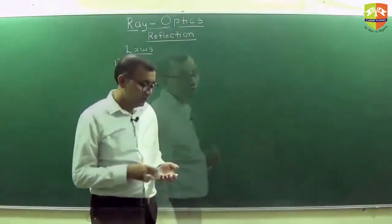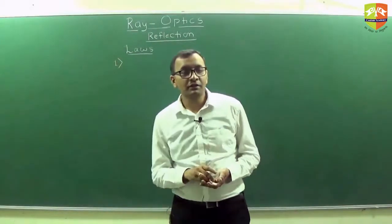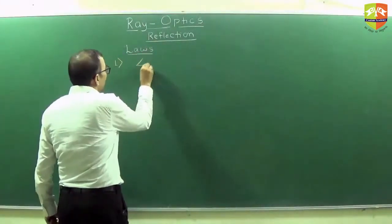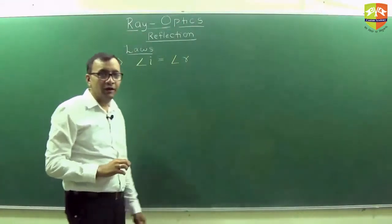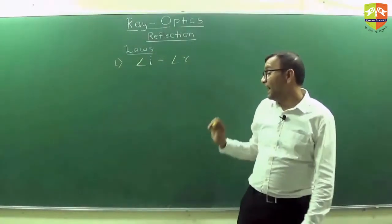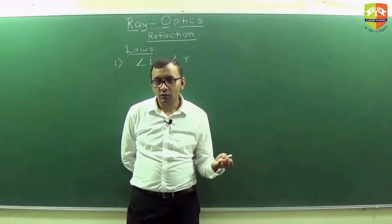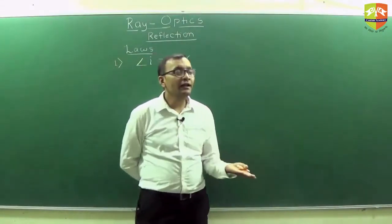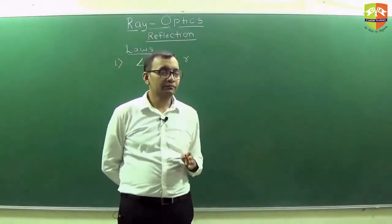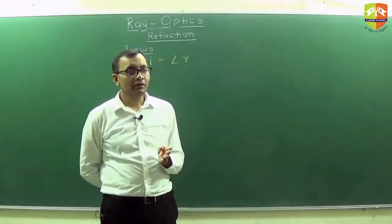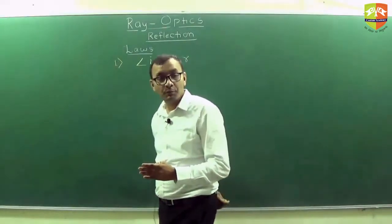First law: write this down — the angle of incidence and angle of reflection are equal, or angle i is equal to angle r. Angle i is the angle between the incident ray and the normal, and the reflected angle is between the reflected ray and the normal. These two angles should always be equal.